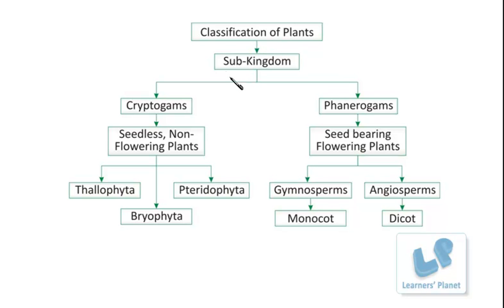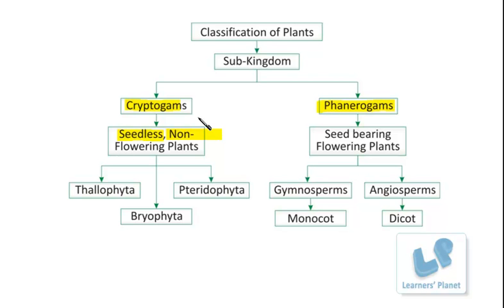These plants are sub-divided into two sub-kingdoms: the Cryptogams and the Phanerogams. Crypto means hidden, and gams is related to gametes. In this particular group, the reproductive parts are hidden — they are not present in an exposed condition. Also, they are seedless plants, meaning they are not able to produce seeds, and they are non-flowering plants.